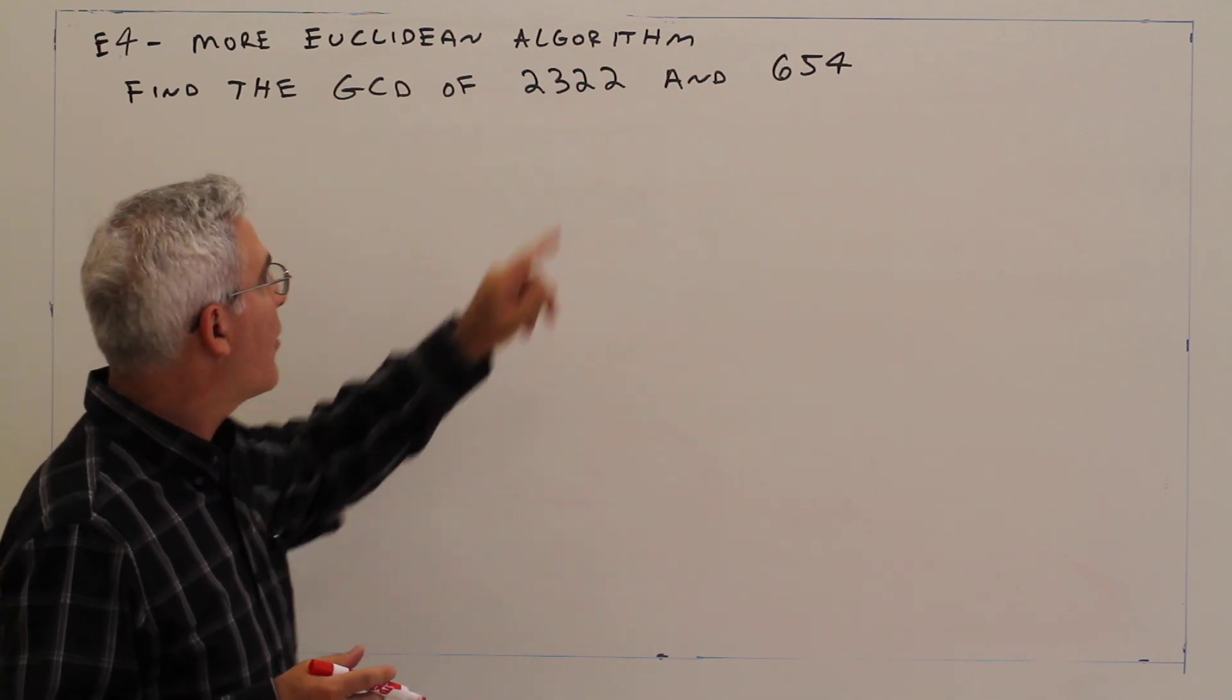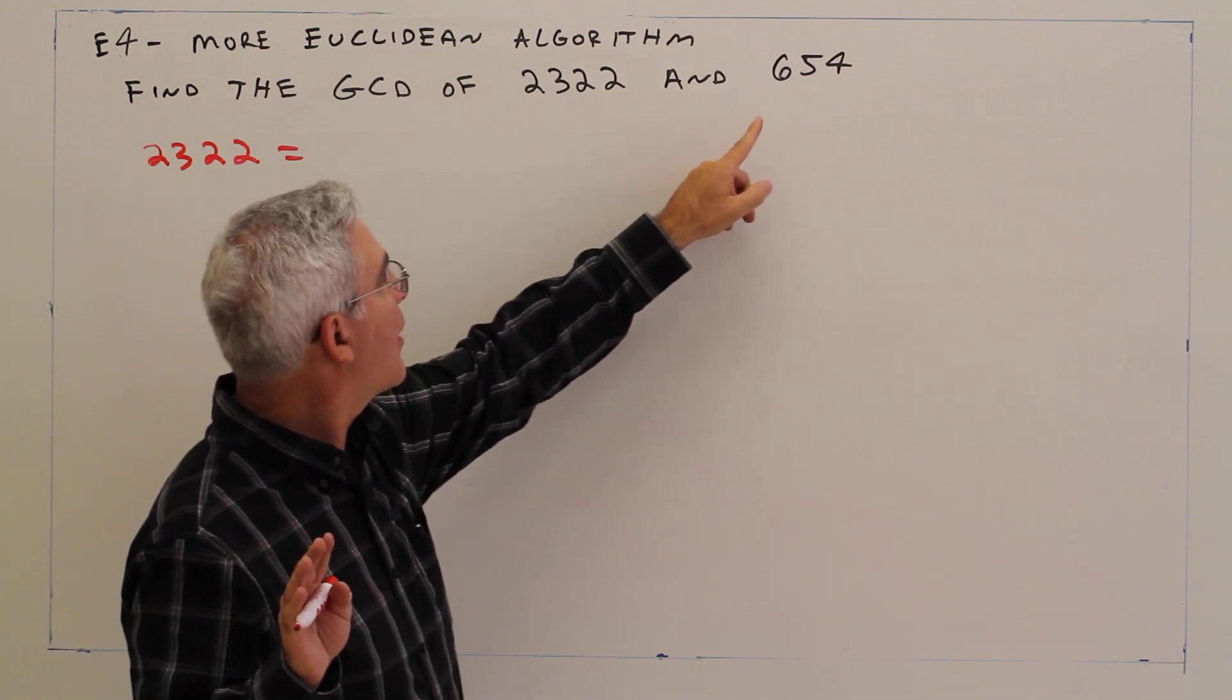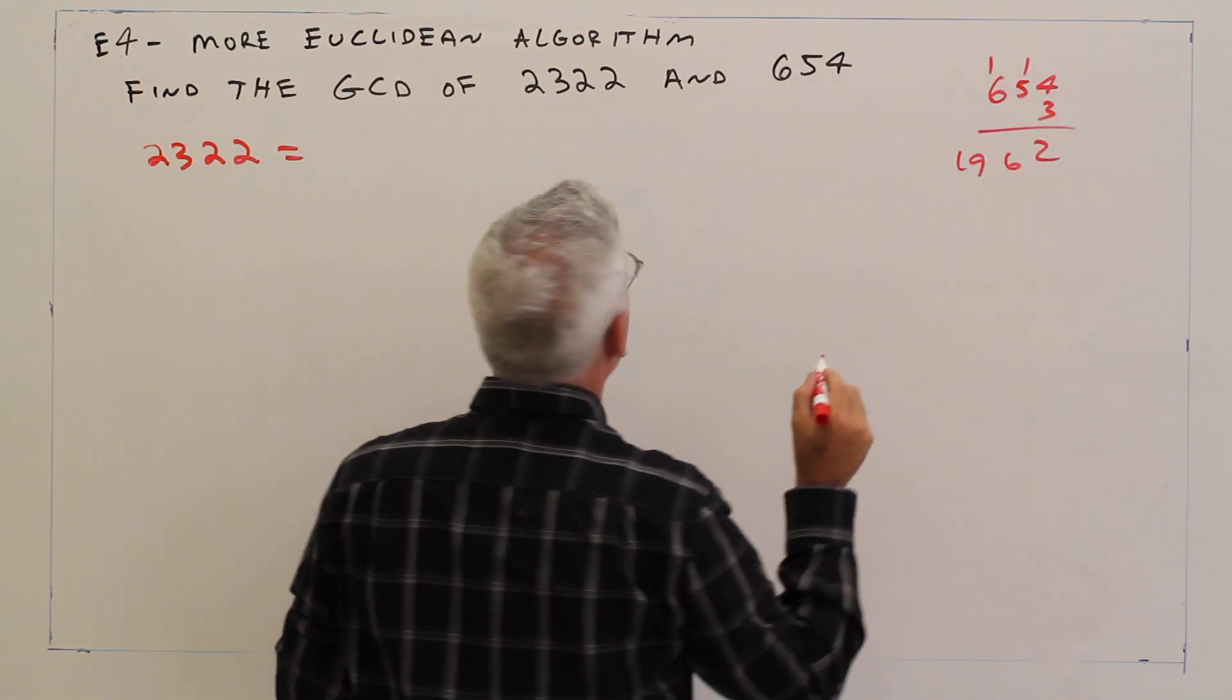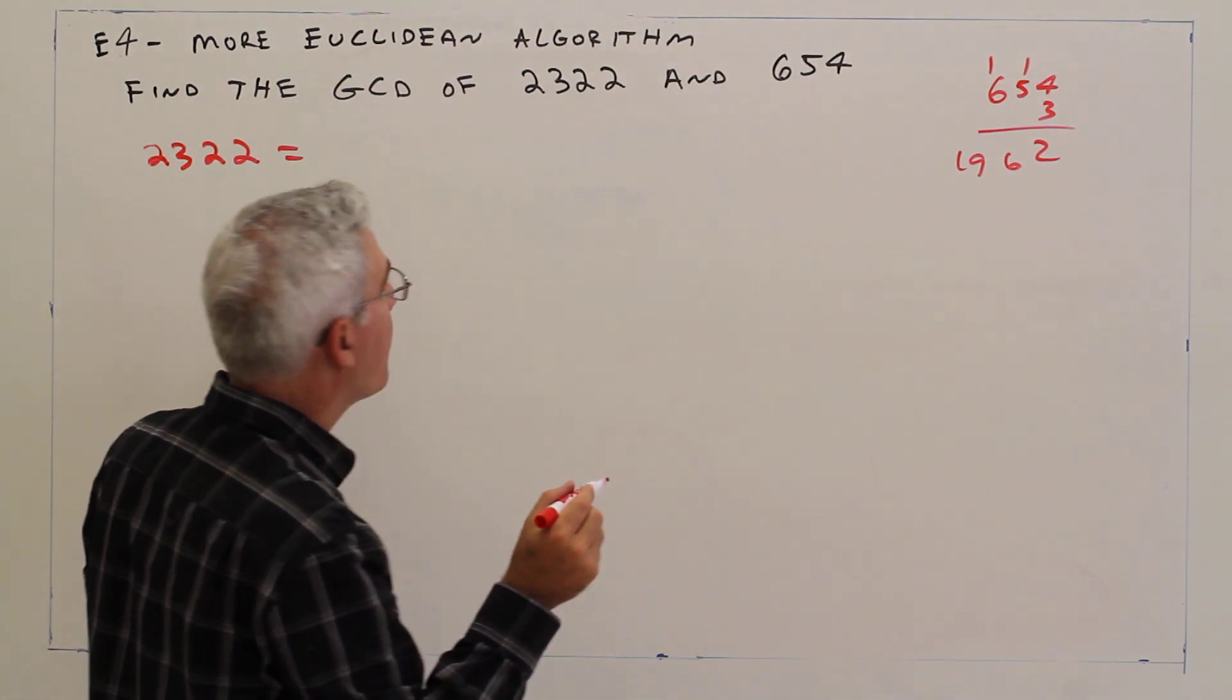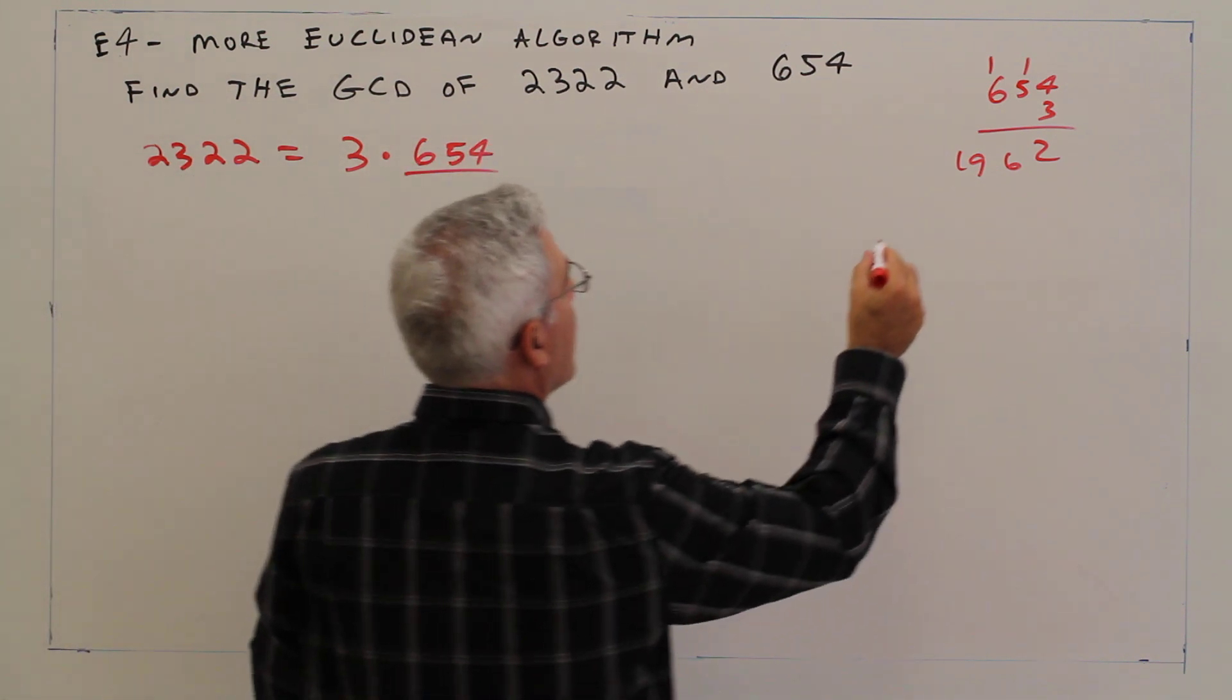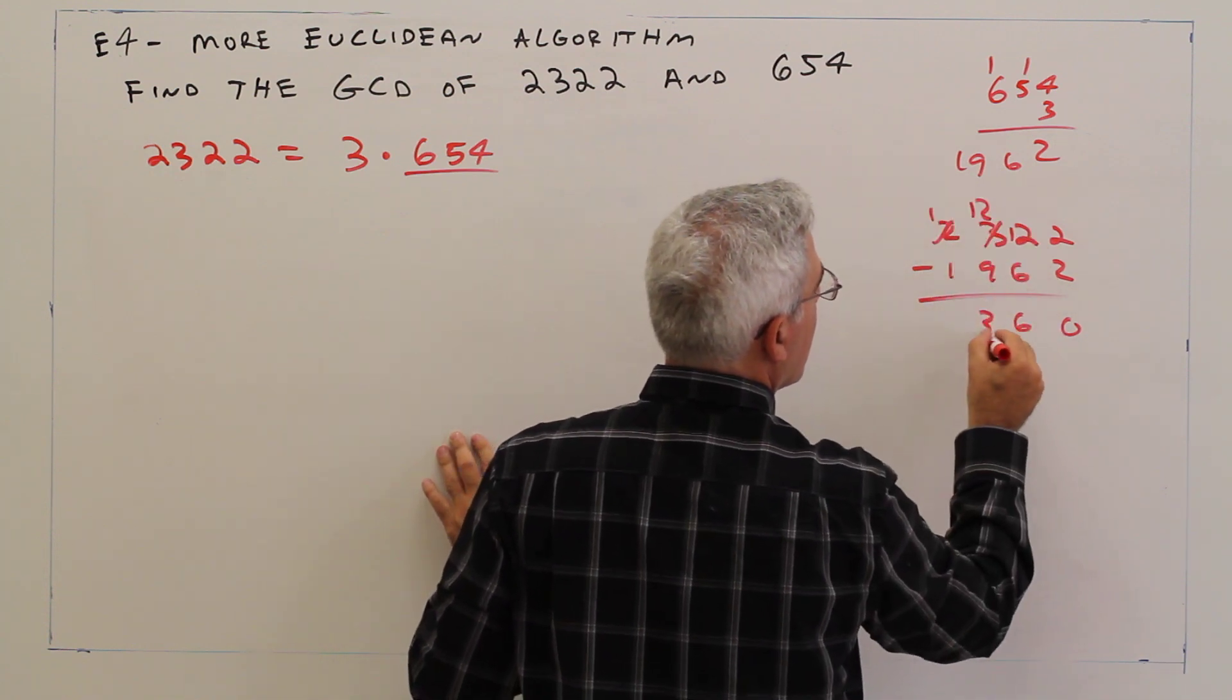All right, so again, start with the largest number, 2322. Find out basically how many of these go into there. I know it can't be four. I'll try three. 654 times 3, 12, 16, 1962. Yeah, that'll work. So I've got three times 654. We're going to find out the remainder. So 2322 minus 1962. So 0, 6, 360.